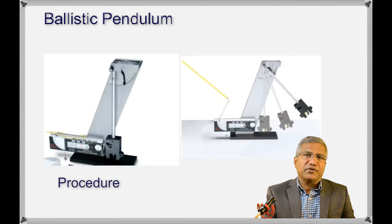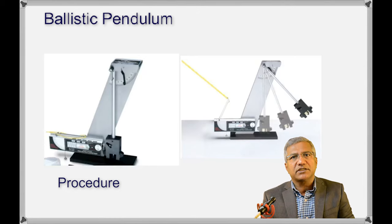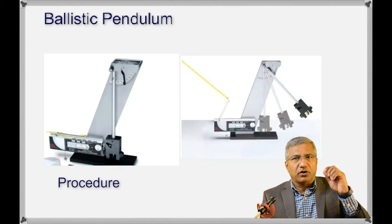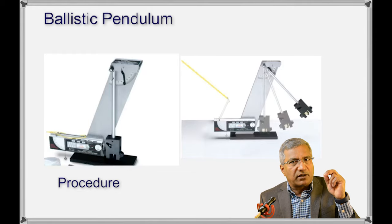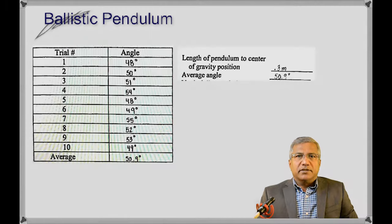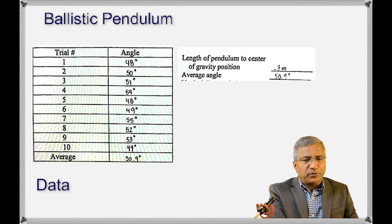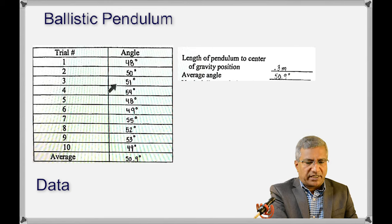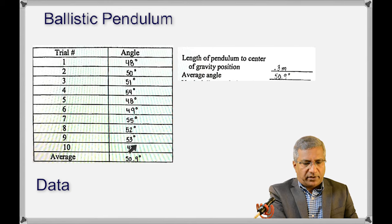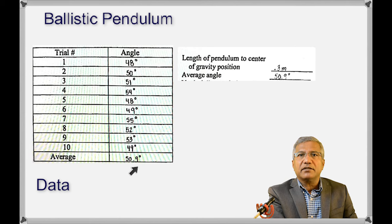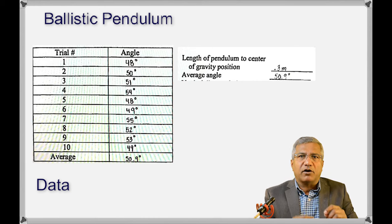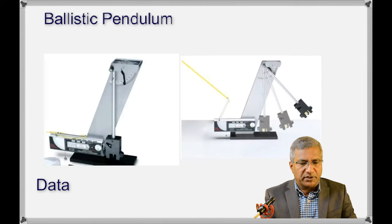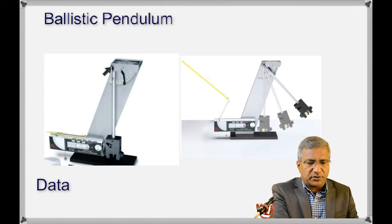Using the average value of the angle and some other quantities we can calculate the velocity with which the steel ball was ejected out of the gun. Here is the data you will be using in this lab — the 10 trials and their angles. The average angle is 50.9 degrees. The pendulum is then taken off from the hook using a screw.